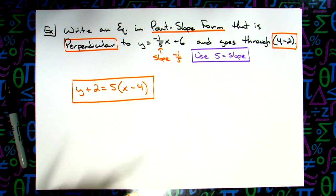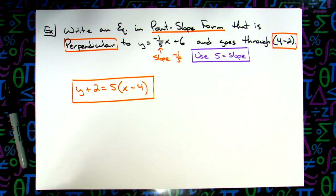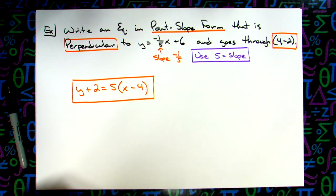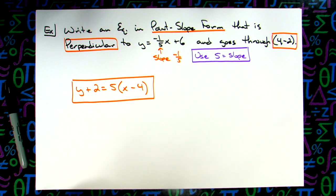That one was straightforward — they only asked for one thing and didn't ask you to rearrange into a different form. From here I could ask you to write it in standard form or slope-intercept form. If we need to see more examples I can do them, but let's go ahead and use the rest of the period to work on the math Excel assignment, and if you've got questions, be sure to come up and ask.